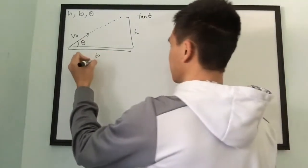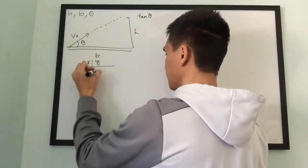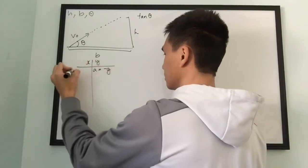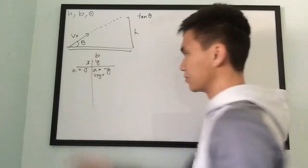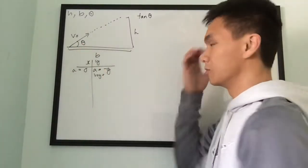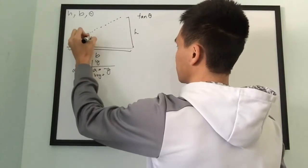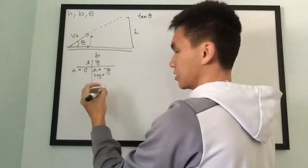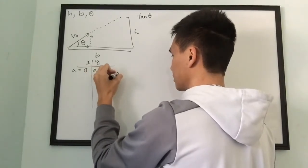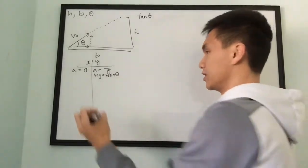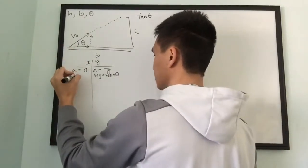First, I'm going to break out the xy chart and establish my givens. In the y-direction, acceleration is negative g; the x-acceleration is zero. V-naught in the y is found by breaking the velocity into components: the y-component is the opposite side, so it uses sine — v-naught sine theta. For the x, it's the adjacent side, so it's v-naught cosine theta.